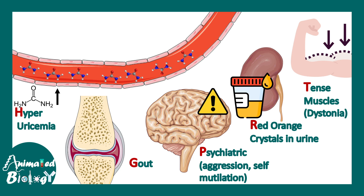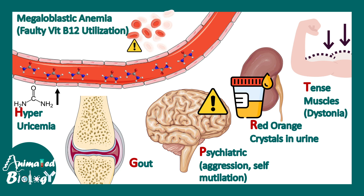The hyperuricemia also causes faulty vitamin B12 utilization, leading to megaloblastic anemia.